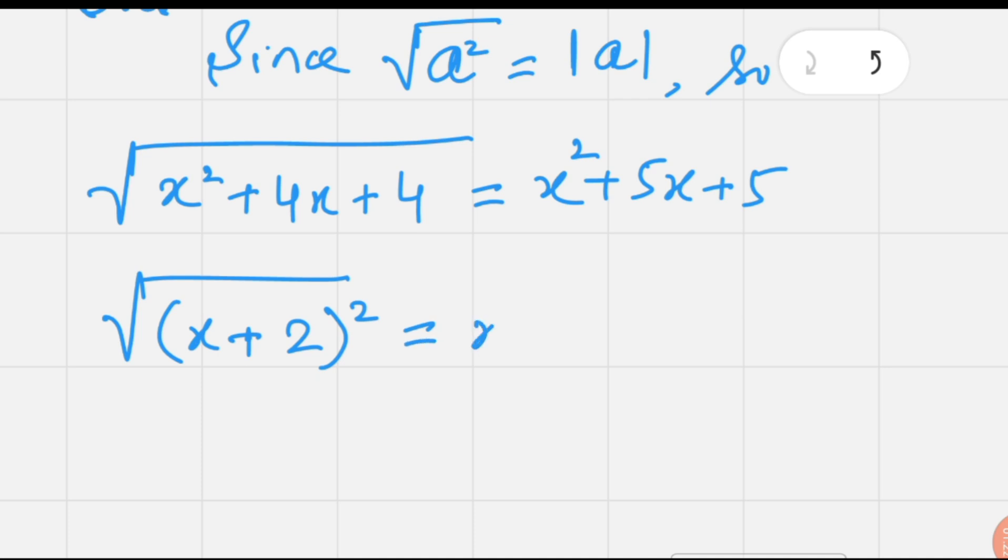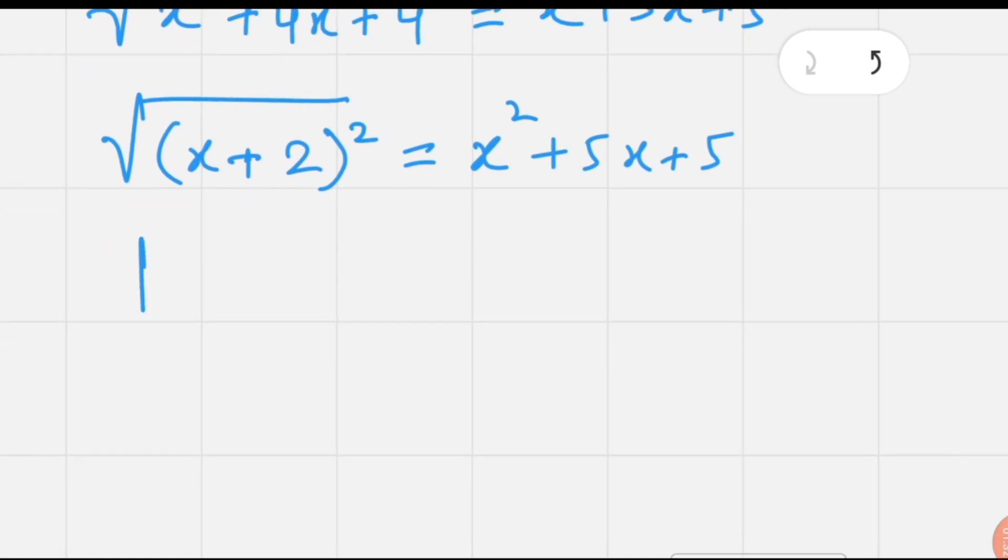This equals x² + 5x + 5. Using the above definition, we can write |x + 2| = x² + 5x + 5. On the basis of the definition of modulus function, solutions are divided into two cases.